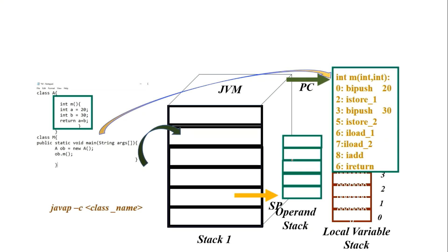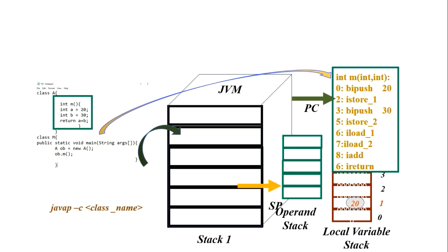First, 'bipush 20' means push the value 20 into the operand stack, and the stack pointer is incremented by one. The program counter moves to the second line. After zero, we get two because the size of an integer is considered as two bytes. Then 'store' means take this value from the operand stack to the local variable stack, after which the operand stack becomes empty. Then we push 30 into the operand stack, increment the stack pointer, and store 30 into the local variable stack.